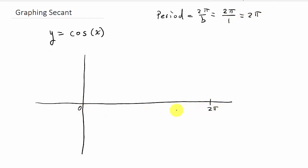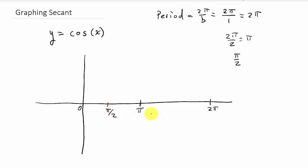We want to break this period up into four equal intervals, so we need the midpoints. To find the midpoint, add the two terms and half it. So 0 plus 2 pi gives 2 pi, halved gives pi. Then 0 plus pi halved gives pi over 2. And halfway between pi and 2 pi: pi plus 2 pi is 3 pi, halved gives 3 pi over 2.